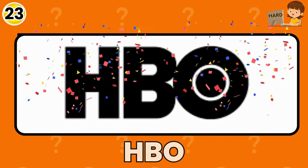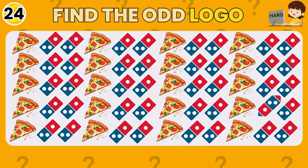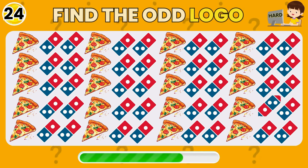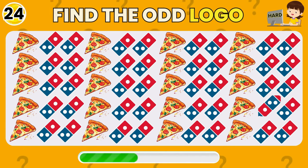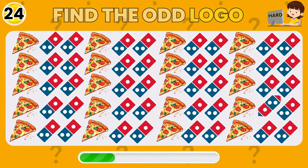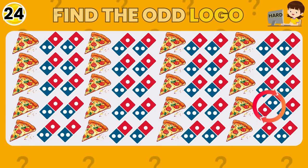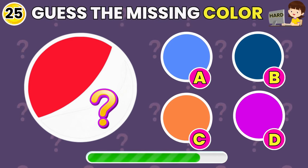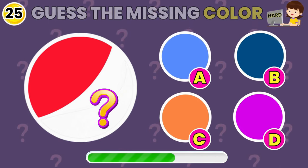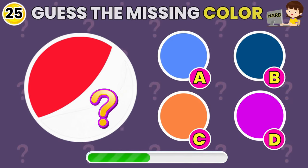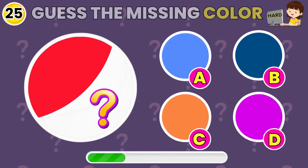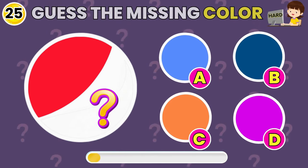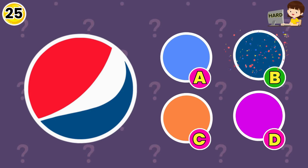Guess the brand by Emoji. You got it — it's HBO! Find the odd logo out. You got it! Guess the missing color here. Yes, the correct option is B.